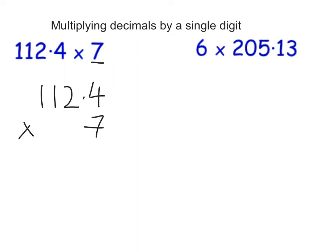I'm going to times everything by 7. 7 times 4 is 28, so put the 8, carry the 2. 7 times 2 is 14, add on the 2, that's 16. So 6, carry 1. 7 times 1 is 7, add on the 1, that's 8. 7 times 1 is 7.